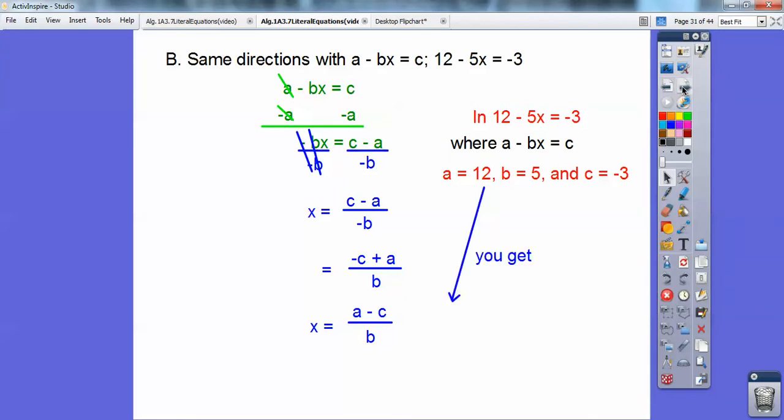So we're going to go ahead and plug that in down into this equation down here. We're going to go a minus c, which is 12 minus a minus 3, and then over b is 5. Of course, 12 minus minus 3 becomes 12 plus 3, so it's 15. 15 over 5 is 3.